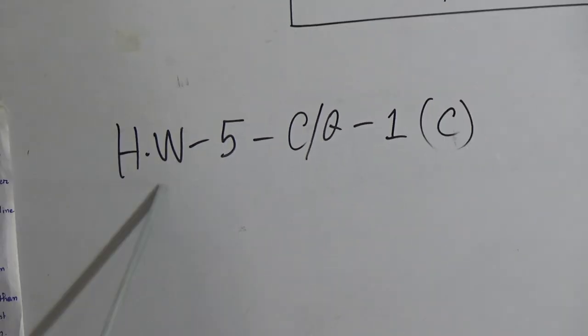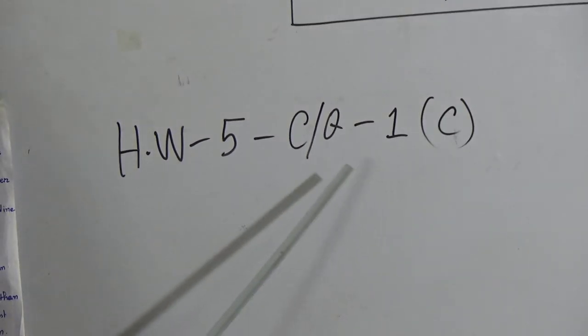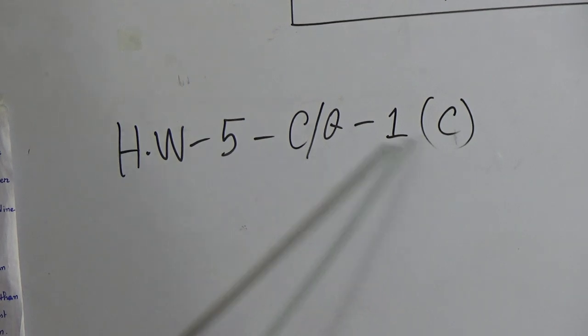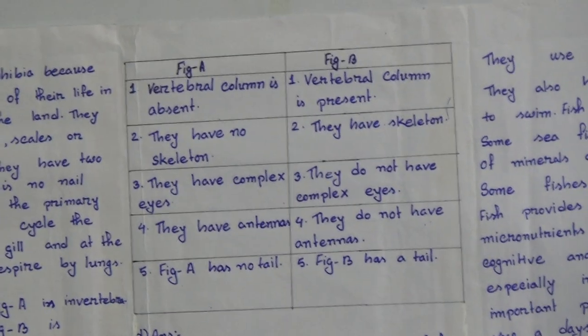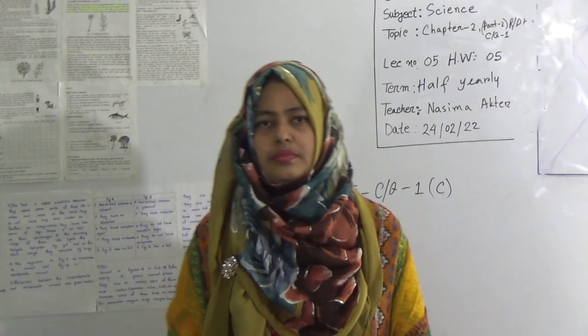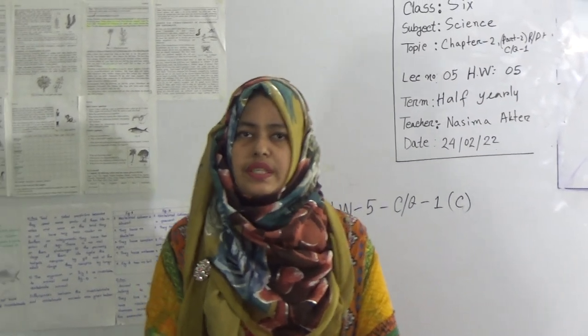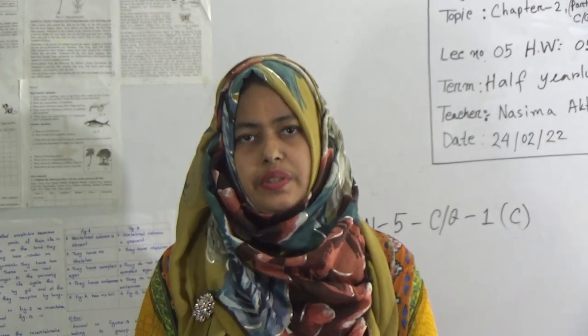Now students, today's homework number is HW 5. Your homework will be CQ 1, sub-question C — the differentiation table — which will be your homework. Dear students, I hope you have understood today's topic. Keep practicing at home and do your classwork and homework in your homework copy.